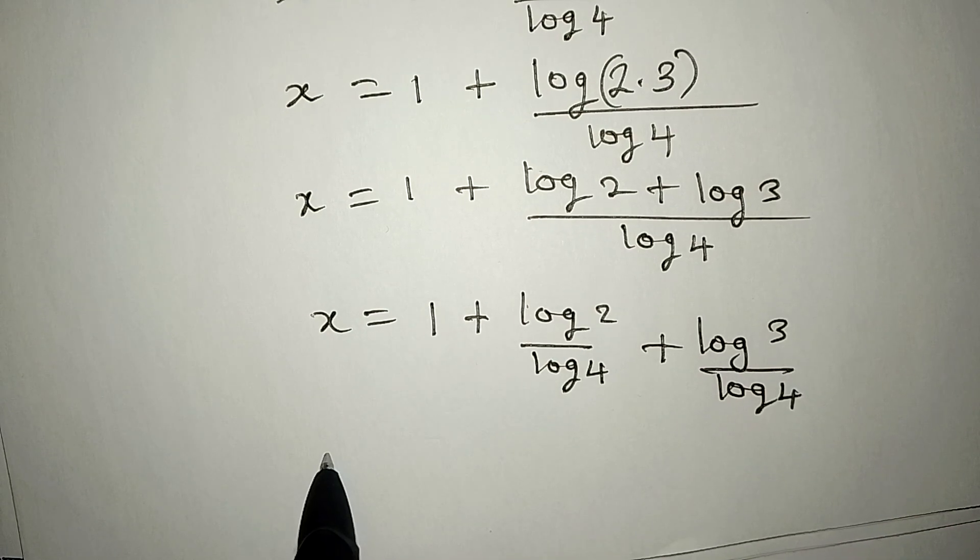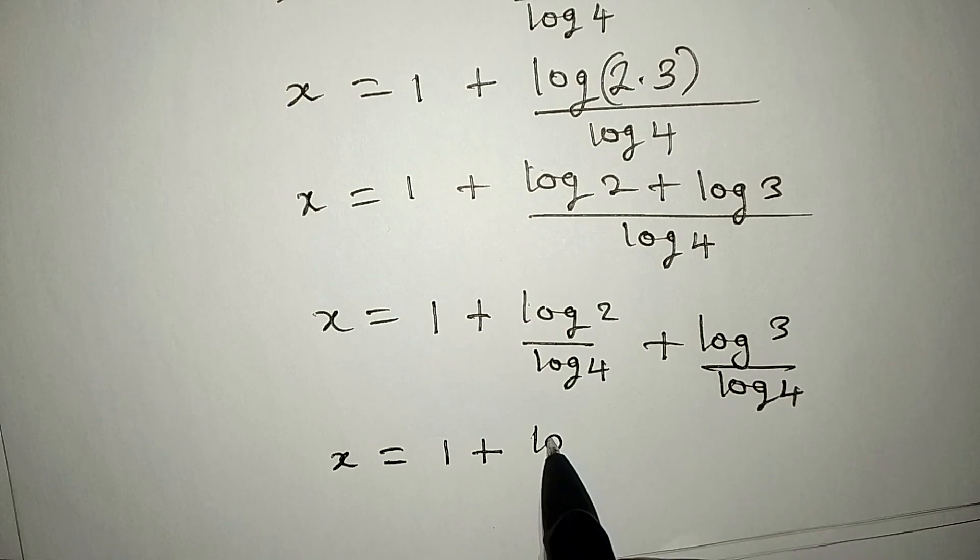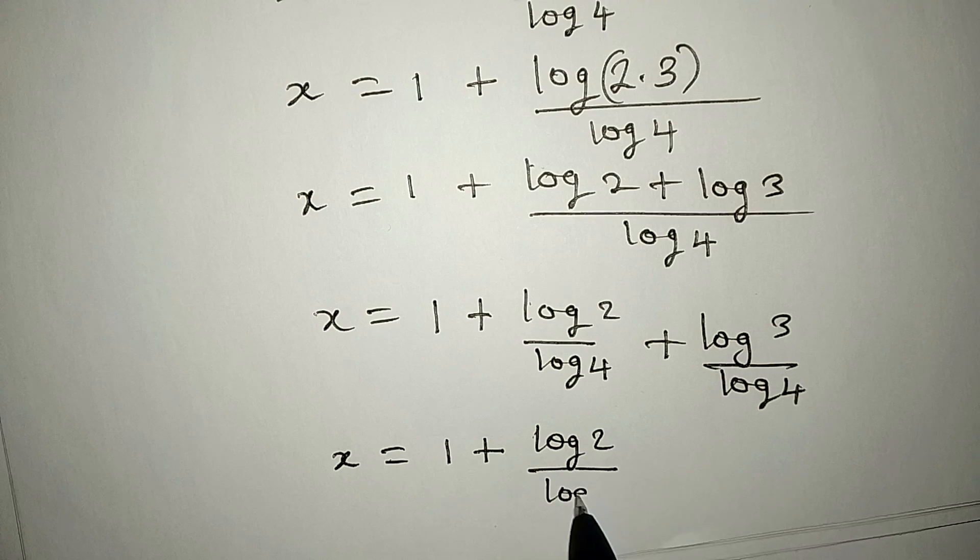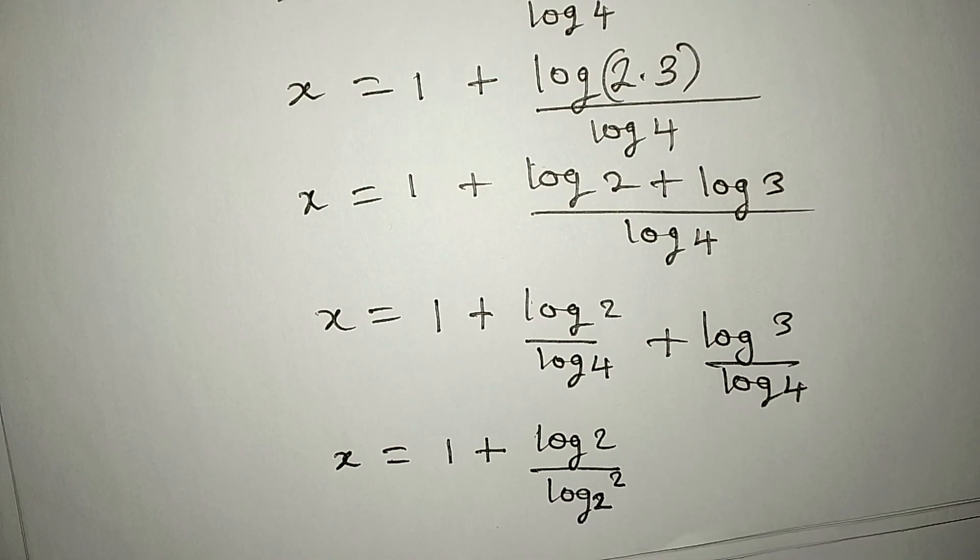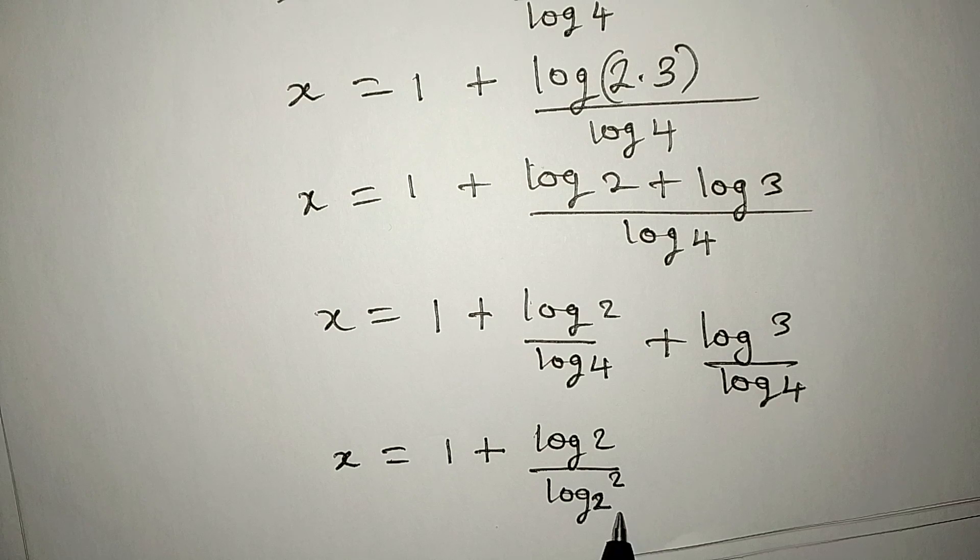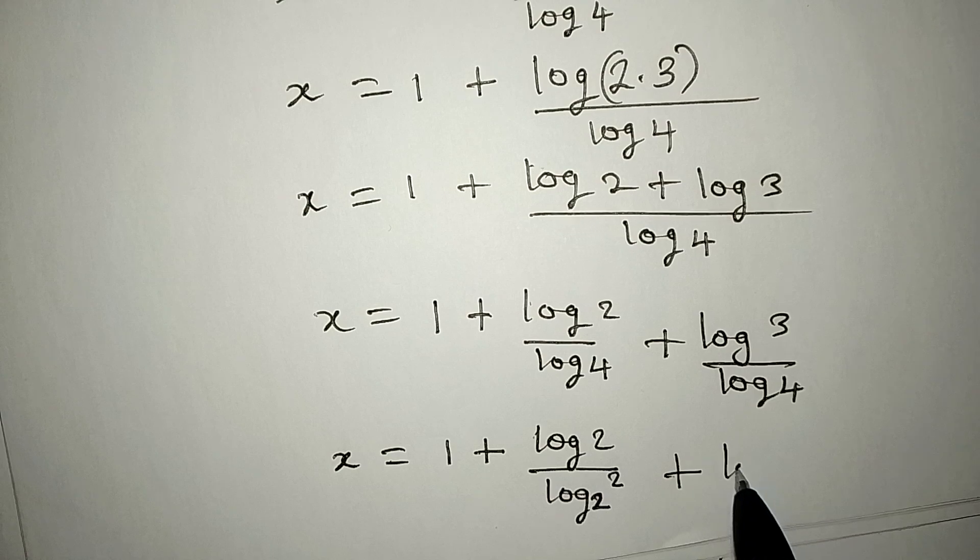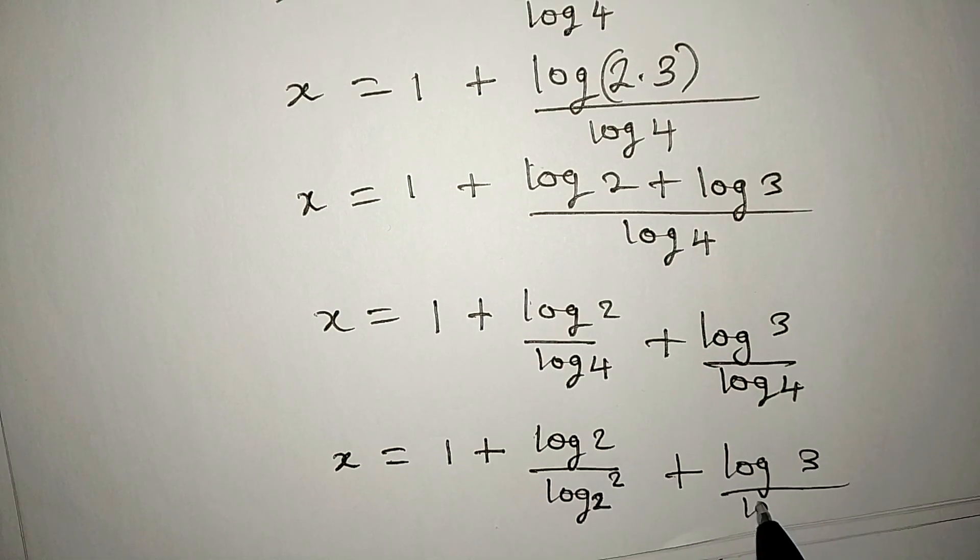Let's continue. So, x will be equal to 1 plus, we have log 2 all over log 2 to the power of 2. Remember, 2 to the power of 2 will give us 4. Plus, here we'll have the same log 3 over log 4.